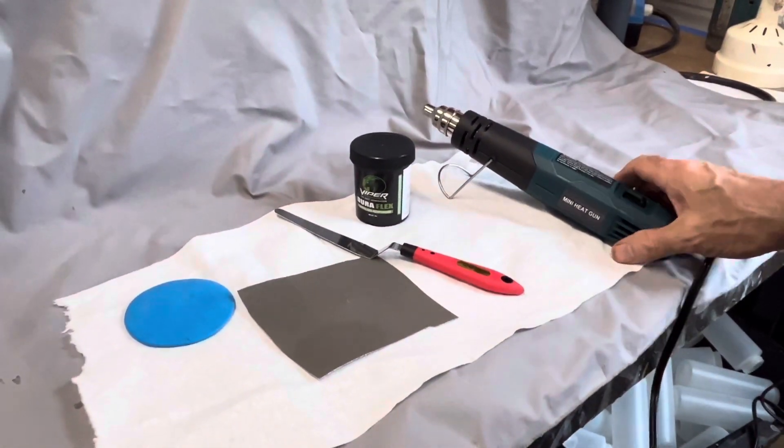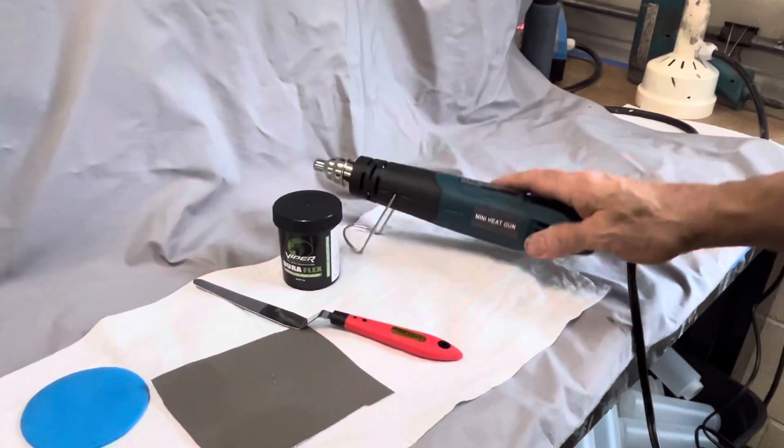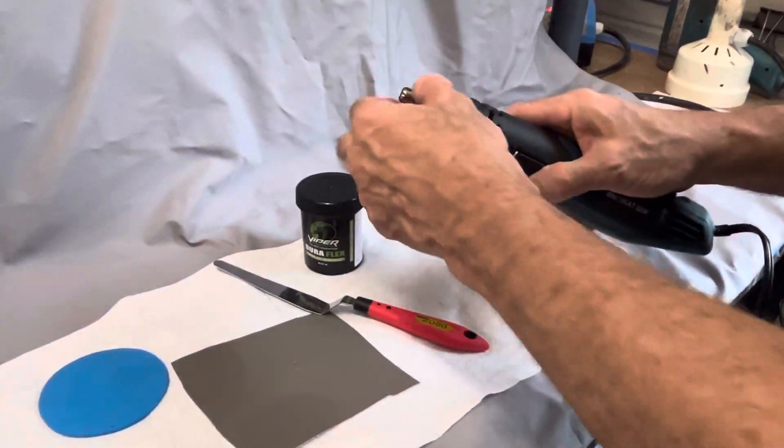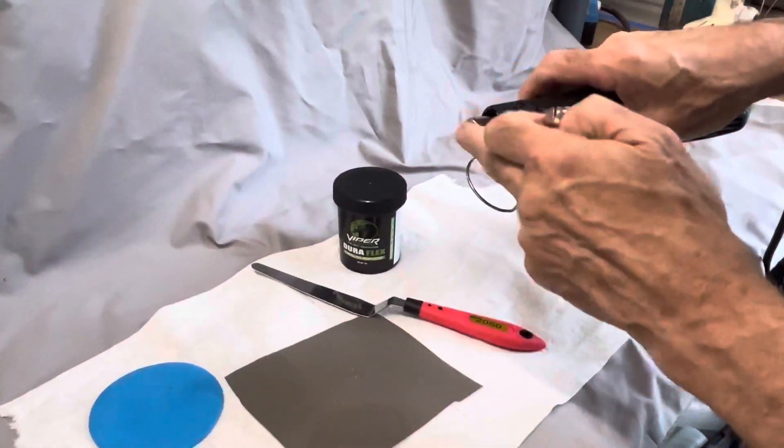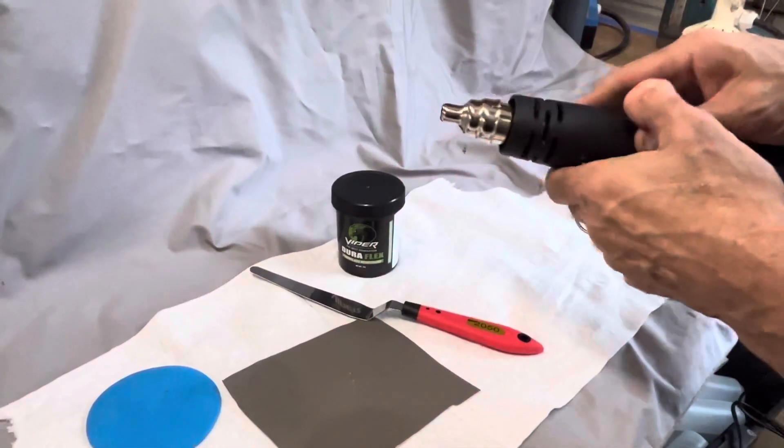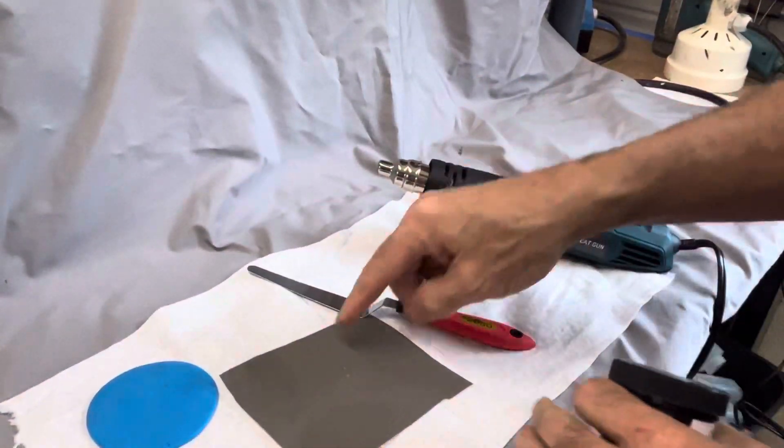Today we want to show you a brand new tool, our mini heat gun. It's compact and comes with a reducer tip that you can put on, so you can use it with or without the tip. We're going to demonstrate a vinyl repair with it. It concentrates the heat to a smaller area.